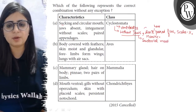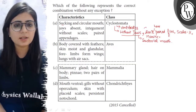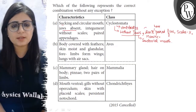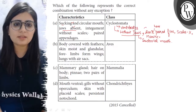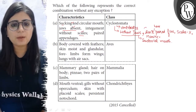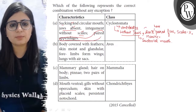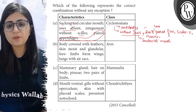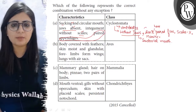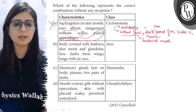They have a suctorial mouth which is circular and sucking. Jaws absent is also correct. Integument — meaning the skin — is without scales, so that is also correct. But paired appendages: in fishes, appendages are fins, and in Cyclostomata paired fins are absent, but the statement says they have paired fins. So this is a wrong statement.